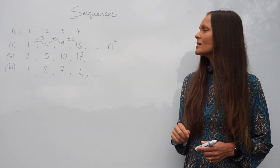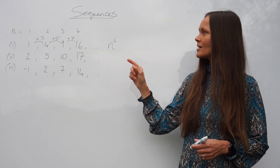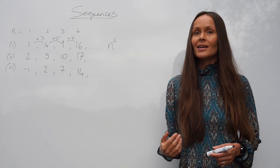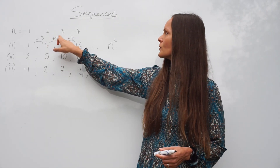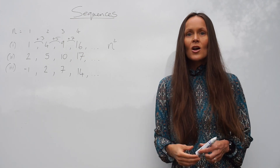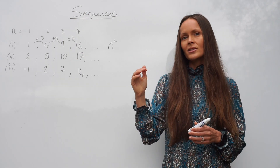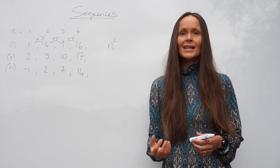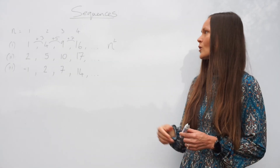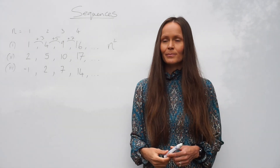But when you consider the differences of those differences — 3, 5, 7 — you can see there's a constant difference of 2 each time. When the second difference is constant, you know you're dealing with a quadratic sequence, and you know that n squared will appear somewhere in your nth term.